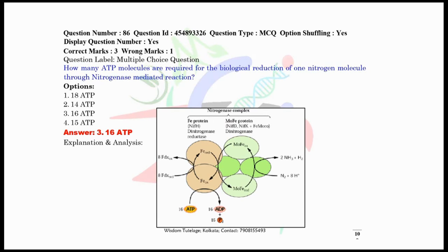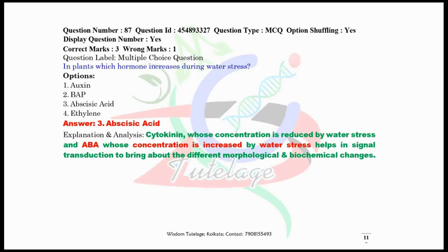Question number 86, how many ATP molecules are required for the biological reduction of one nitrogen molecule through nitrogenase-mediated reaction? If you go through the stoichiometry of the nitrogen metabolism, there is a requirement of 16 ATP, 8 ferredoxin, and the production rate is 2 NH3 and 1 hydrogen. The answer is 16 ATP. Now question number 87, in plants which hormone increases during water stress? The correct answer is abscisic acid. Cytokinin concentration is reduced by water stress, and simultaneously the abscisic acid concentration is increased by water stress.